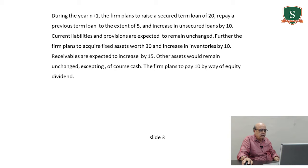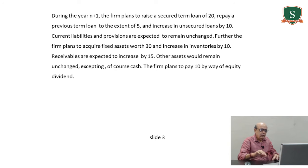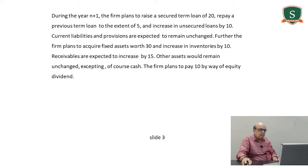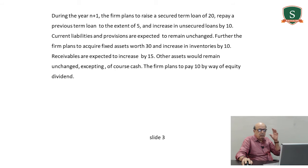The firm plans to acquire fixed assets worth 30 — cash outflow. Increase in inventories by 10 — cash outflow. Receivables are expected to increase by 15 — cash outflow. Other assets remain unchanged, except of course cash, which is the closing balance. The firm plans to pay 10 by way of equity dividend — cash outflow. Keep all of this in mind before solving the problem.